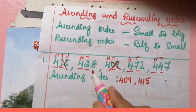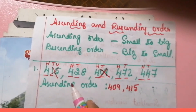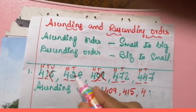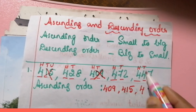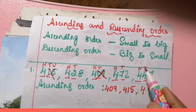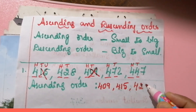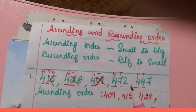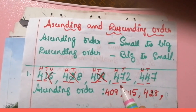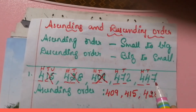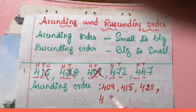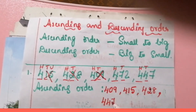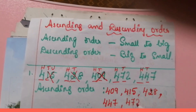Now we will compare the remaining three numbers. The tens digits are two tens, seven tens, and four tens — that is twenty, seventy, and forty. Two is the smallest number, so four hundred and twenty-eight comes next and we cross it out. Now there are two numbers: four hundred and seventy-two and four hundred and forty-seven. Comparing seven tens and four tens, four hundred and forty-seven is smaller, and the last number is four hundred and seventy-two.